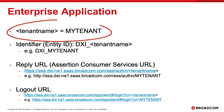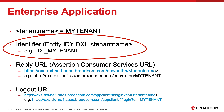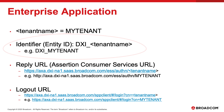We're going to replace the parameter 'tenant name' with your friendly tenant name. The identifier — the entity ID — will follow the convention: DXI underscore, then your tenant name. For example, in our case it's DXI underscore my tenant; in your case, whatever your tenant name is.